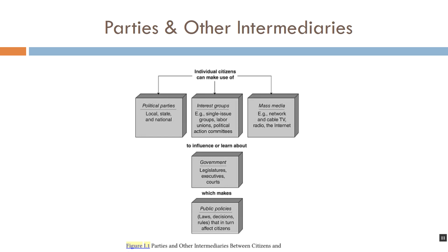Interest groups are different — an interest group is an organized group of individuals making policy-related appeals to the government. The media is a channel of communication; when we're talking about political organizations and intermediaries, we're particularly interested in mass media. A mass medium is a channel of communication that reaches a very large audience. Of the various mass media — music, video games, television — the most important for political purposes is arguably the news media, which is a channel of communication reaching a large audience that routinely conveys political information.